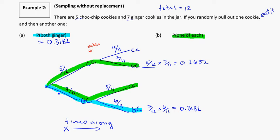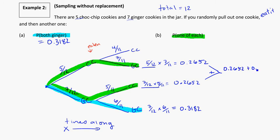In the other situation, the individual probability for ginger first then chocolate chip is seven out of twelve times five over eleven, which is also equal to 0.2652. Now that I've got more than one possibility that fits the criteria for one of each flavor — chocolate then ginger, or ginger then chocolate — I have to add those together. So 0.2652 plus 0.2652 equals 0.5304. That is the probability that I get one of each flavor.